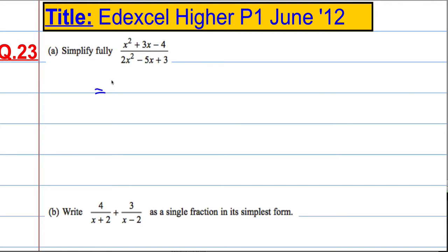So let's factorize the top. I'm going to have x and x and I need numbers that multiply to give me minus 4 but add to give 3. So it's going to have to be plus 4 and minus 1. So that's the top factorized.